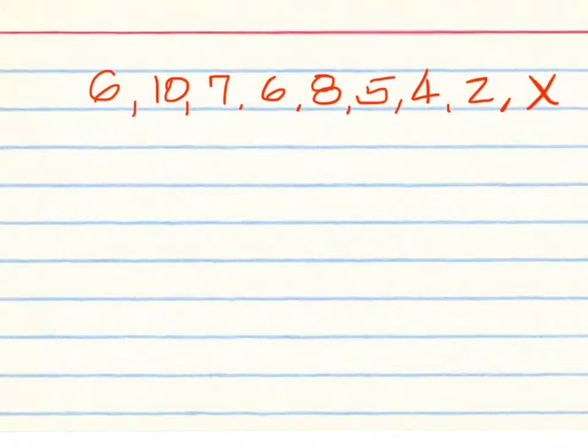In this game, we have a 6, 10, 7, 6, 8, 5, 4, and a 2. And we still have one turn to go, X. The average we are going to try to get is 7. We want an average of 7. So what would we have to do on that last turn? Add up what you know so far.